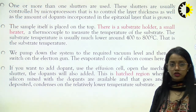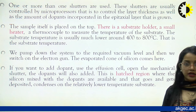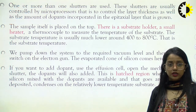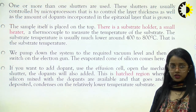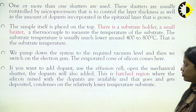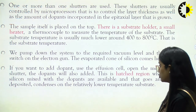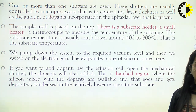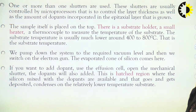We pump down the subsystem to the required vacuum level and then switch on the electron gun. The evaporated cone of silicon comes in. If we want to add dopant, we use the effusion cells and open the mechanical shutter, and the dopants will be added. In this way, there is a region where silicon mixed with dopants is available, and that goes and gets deposited and condenses on the relatively lower temperature substrate.